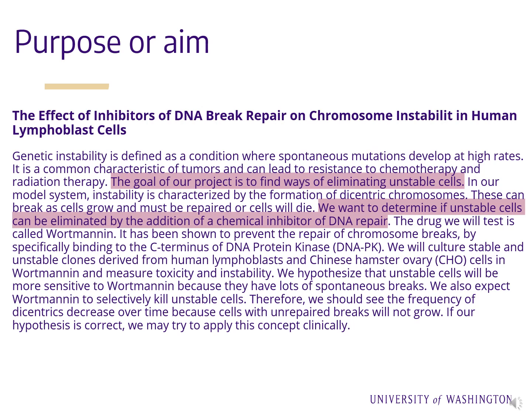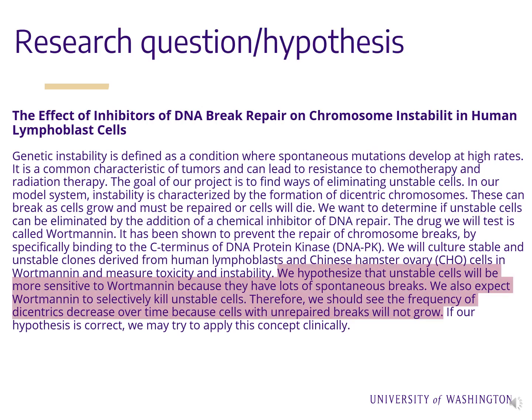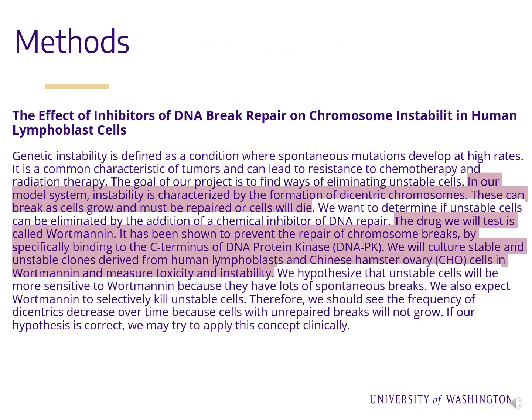The purpose is stated in the sentence 'the goal of our project is to find ways of eliminating unstable cells,' so the reader knows that the author is trying to find methods that would remove unstable cells. In the second highlighted sentence, the author uses the passive voice — this sentence needs to be revised and changed to the active voice. Next, the research question or hypothesis includes the approach that the project will use: in this case, a chemical inhibitor of DNA repair, or the drug Wortmannin. Note again the passive voice used in this portion of the abstract.